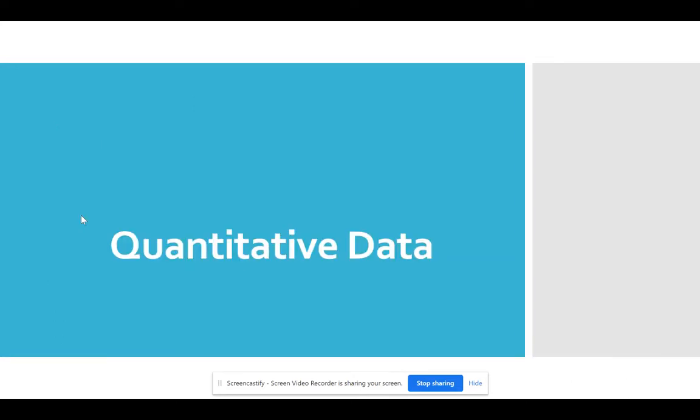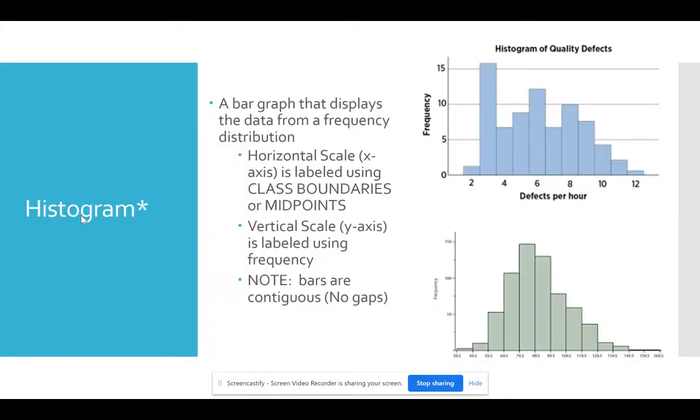So let's switch gears to quantitative data. Quantitative data, one of the most useful or the one that's used most often is called a histogram. And a histogram is similar to a bar graph, but notice it doesn't have gaps between the bars.